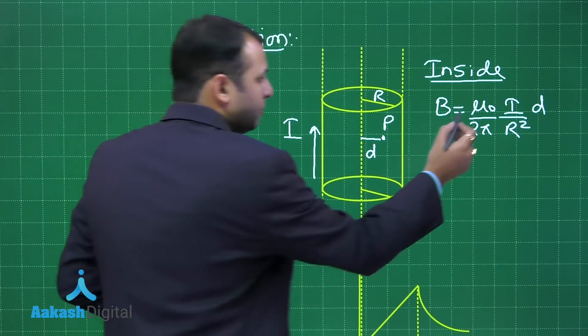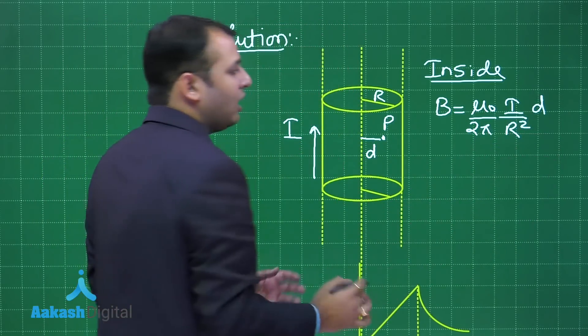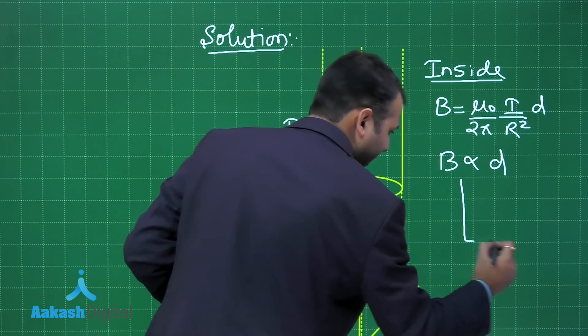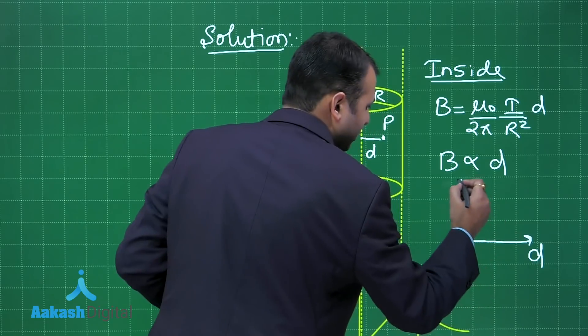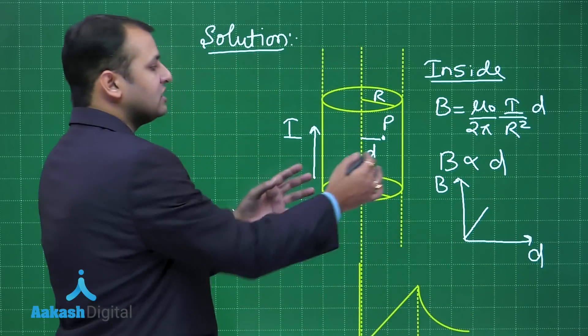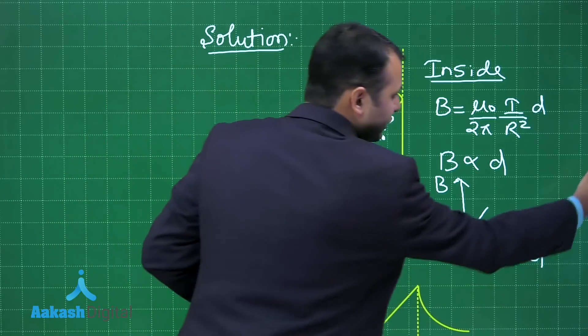B is given by mu 0 upon 2 pi I by R square into D. As you can see inside, mu 0 upon 2 pi I and R will be constant. So B is proportional to D. So the diagram or the graph between B and D will be like straight line till it reaches the surface. At surface when you reach,